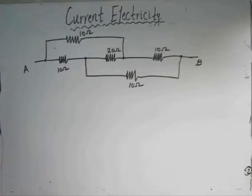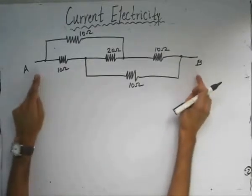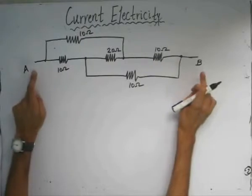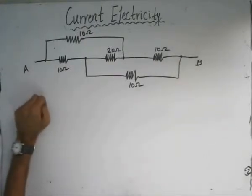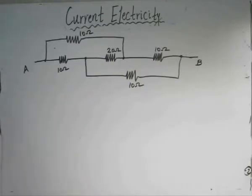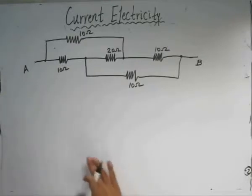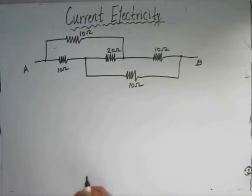This is the electrical circuit given to us, and we are required to determine the equivalent resistance between the points A and B. If we look closely at the circuit, we can see that the resistors are neither in series nor in parallel, and this does not resemble the Wheatstone Bridge at first glance. But if we look carefully, we can see that it is actually in the pattern of a Wheatstone network.